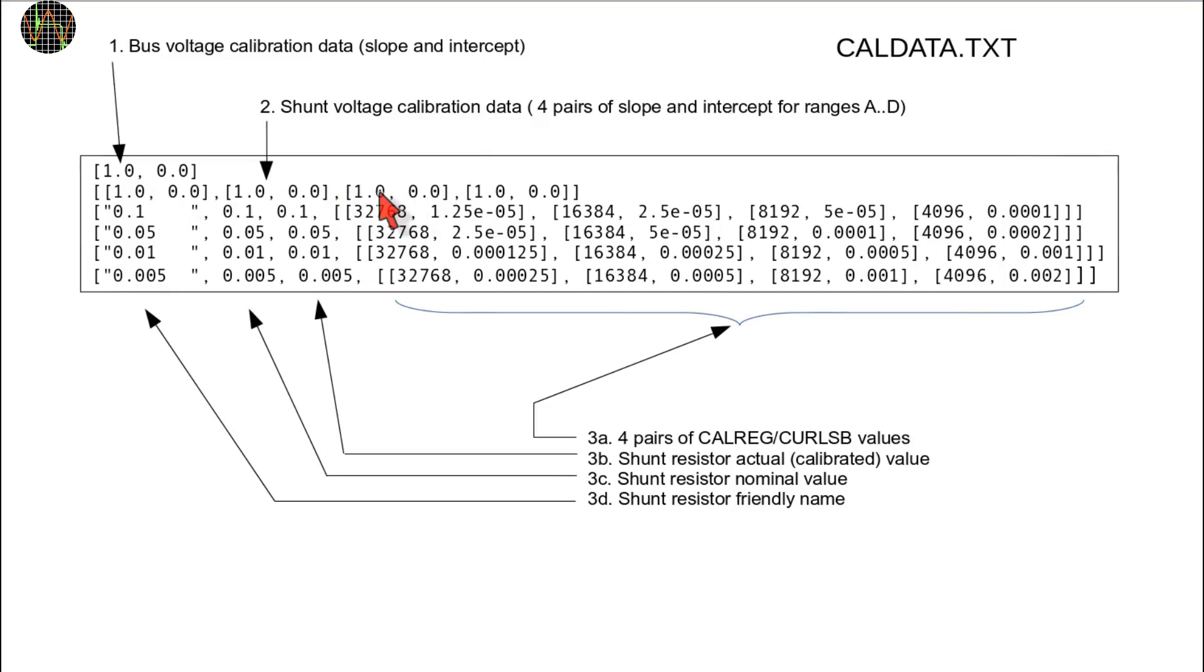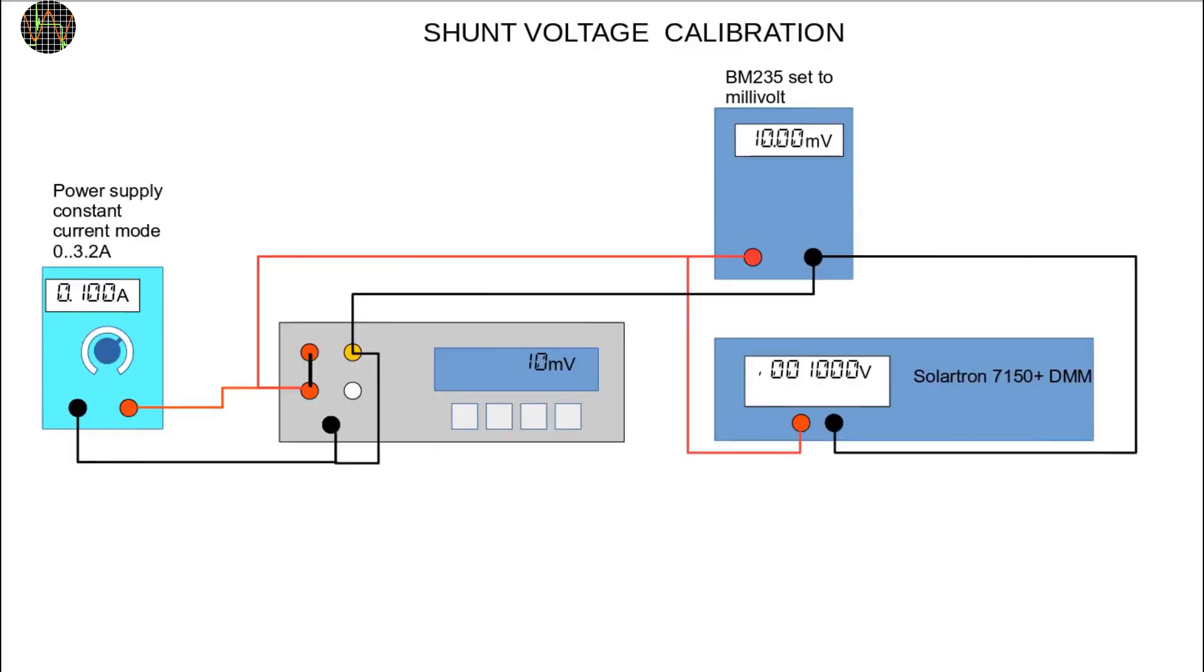At least for my INA219 chip, this would work just fine without any noticeable loss of accuracy. To calibrate a shunt voltage, there are a couple of options.